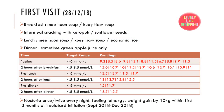In terms of diet, on the first visit on the 18th of December, he claimed to have mee hoon soup or kuey teow soup. He usually snacked between meals with keropok or sunflower seeds. For lunch, he usually had mee hoon, kuey teow, or economic rice. For dinner, he sometimes drank apple juice only. All self-monitoring blood glucose results were out of target range. He experienced nocturia once or twice every night, feeling lethargy, and gained 10 kg weight within the first 3 months of Insulatard initiation from September 2018 to December 2018.